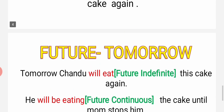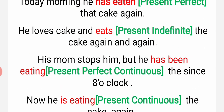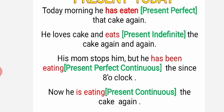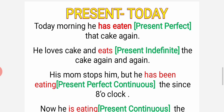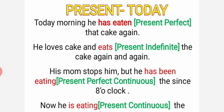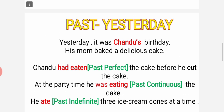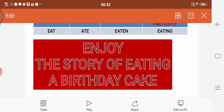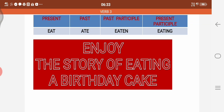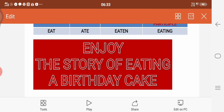So in this way we have come to know the three forms of verb as well as where to use them, and we have learnt tense also. So children, you take the word 'drink' - drink, drank, drunk, drinking. Use it in your own way, frame a story in this way and enjoy doing this. This is a beautiful activity for you. Thank you.